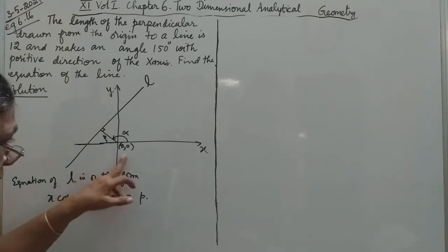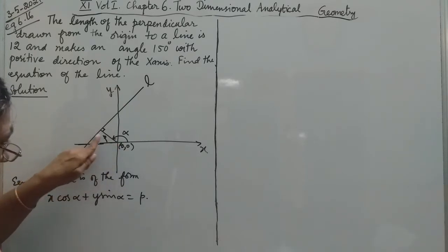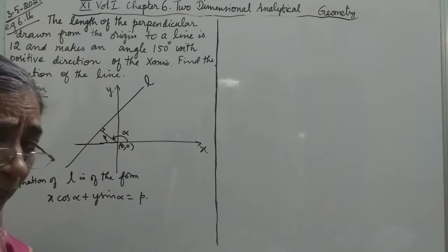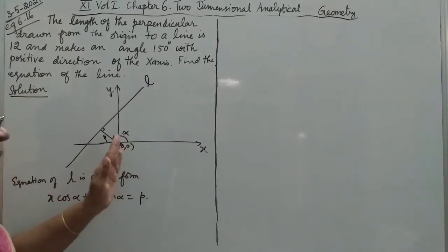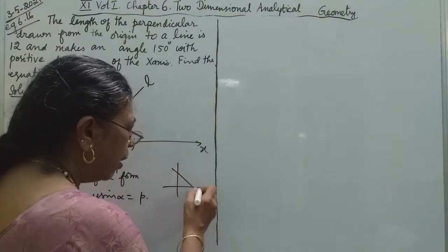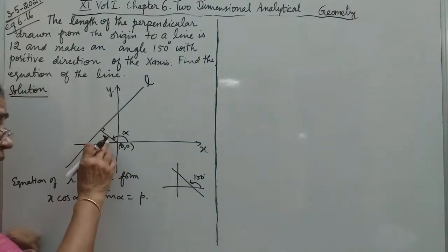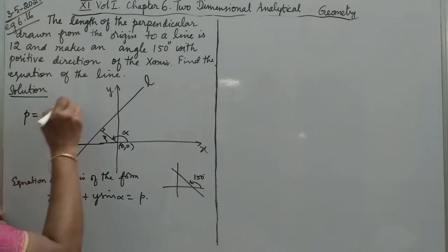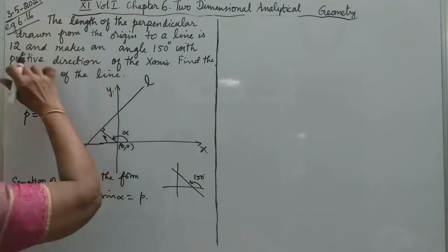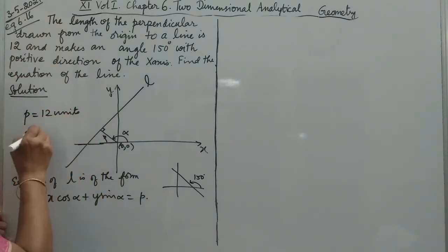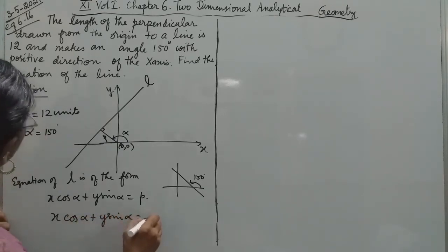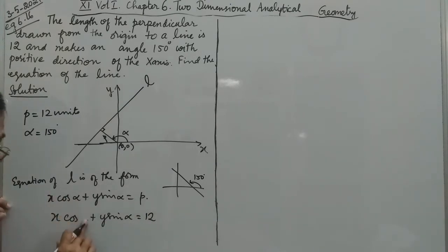Here, p is the perpendicular distance from the origin to the line, and α is the angle the perpendicular makes with the positive x-axis. So p is equal to 12 units, and α is equal to 150 degrees. Substituting into the equation: x·cos 150 + y·sin 150 = 12.